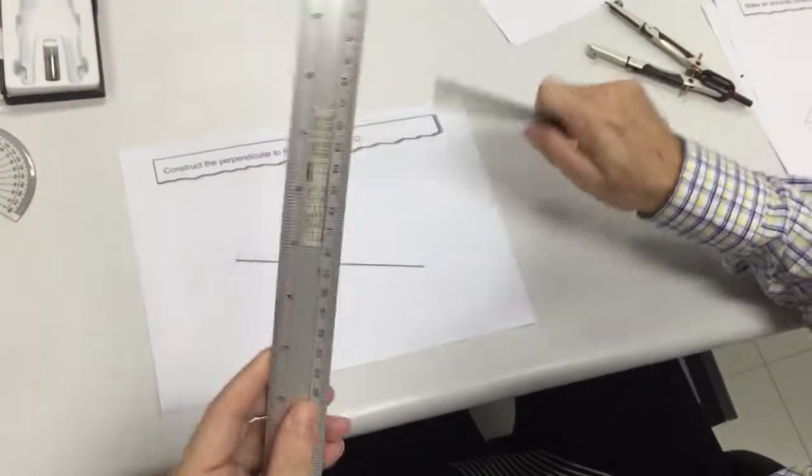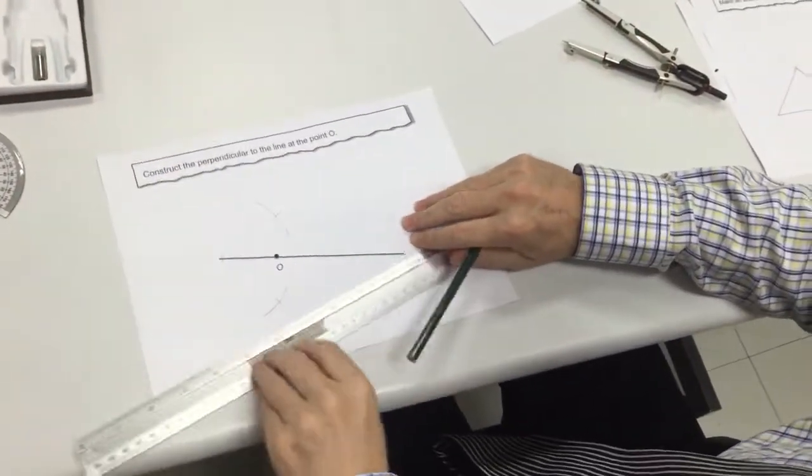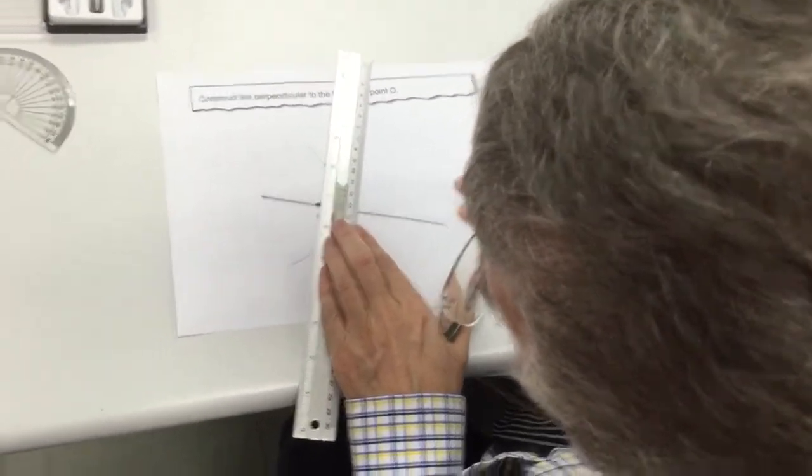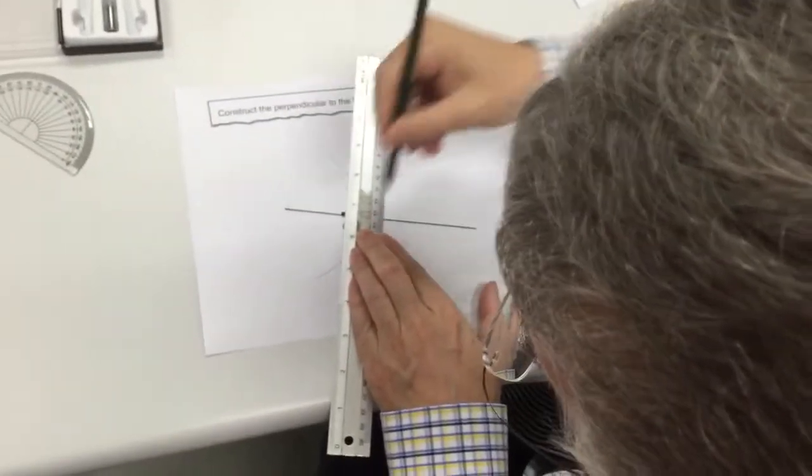Then you can take your straight edge and you can draw in the bisector at O.